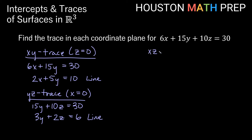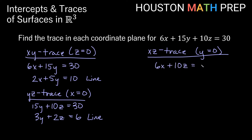Finally, let's look at our xz-trace. Our xz-trace will be when y is 0, lying in the xz-plane. Setting y equal to 0 gives us 6x plus 10z is equal to 30. Everything is divisible by 2, so we can reduce this to 3x plus 5z is equal to 15. Again, we have a linear equation in x and z, so this would also be a line with its own slope and intercept in the xz-plane.